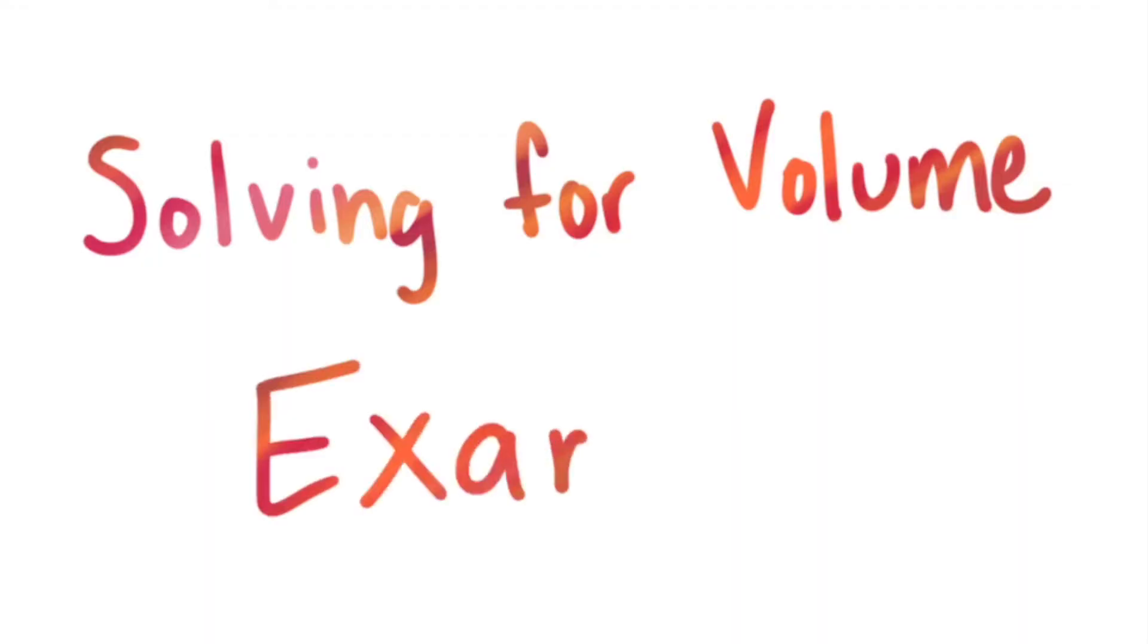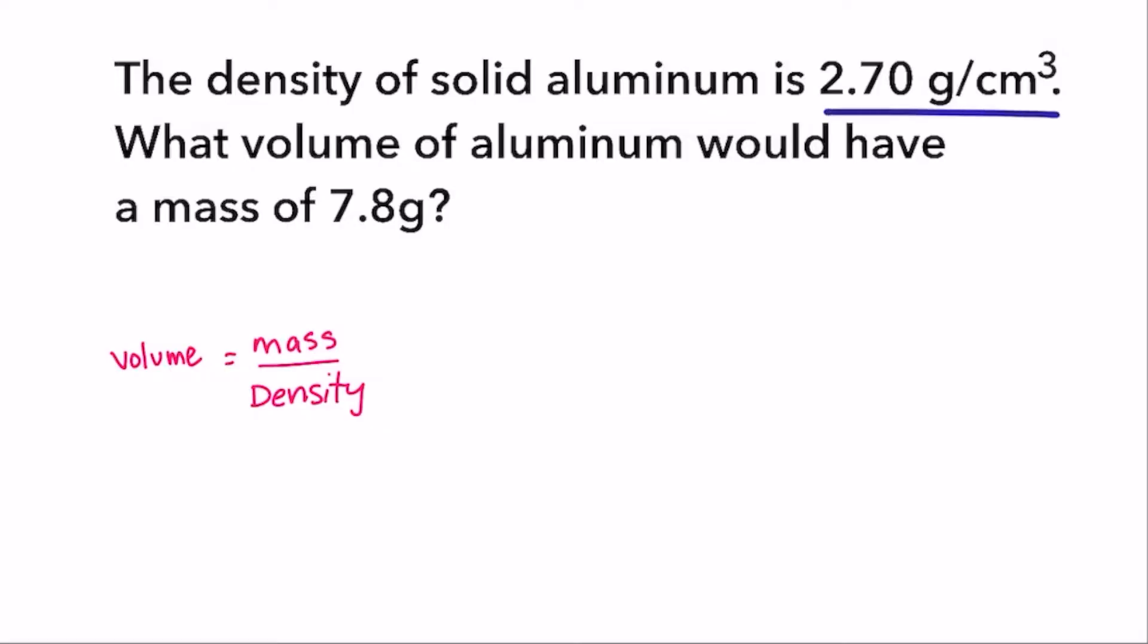Let's try another one, solving for volume. The density of solid aluminum is 2.70 grams per cubic centimeter. What volume of aluminum would have a mass of 7.8 grams? Since we're solving for volume again, we can use our rearranged formula, volume equals mass divided by density.